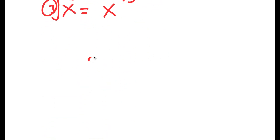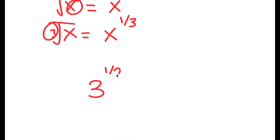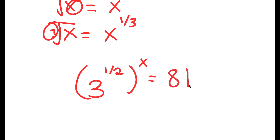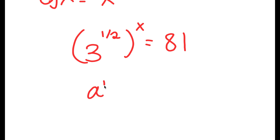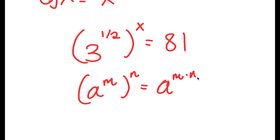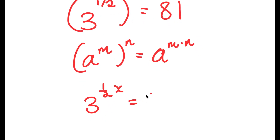If I substitute 3 to the power of 1/2 for square root of 3, I get 3 to the power of 1/2, to the power of x, is equal to 81. Now, if I have something in the form a to the power of m to the power of n, this equals a to the power of m times n. So 3 to the power of 1/2 to the power of x equals 3 to the power of 1/2 times x, which is simply 3 to the power of x/2, and this equals 81.